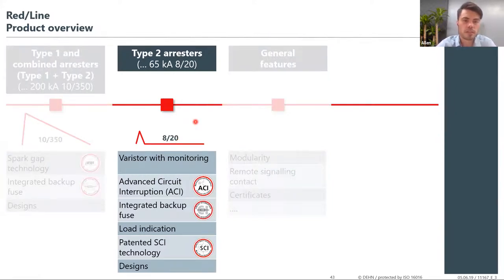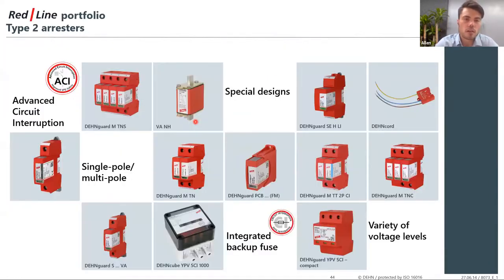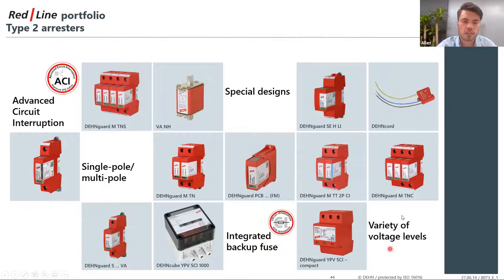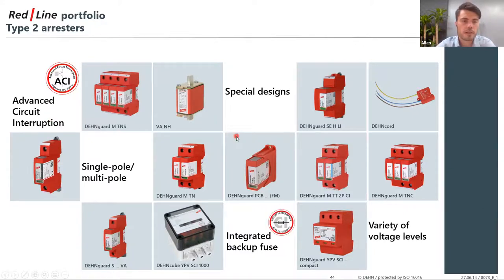DEN's Type 2 surge protection devices are manufactured for different industries. You have single-pole SPDs for residential areas, DEN cores installable in a plug next to electrical equipment, Type 2 SPDs for the PV industry, and different variants based on voltage level. We've moved from CI technology in our Type 2 SPDs to ACI — Advanced Circuit Interruption — which I'll explain in the next slides.